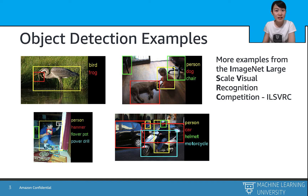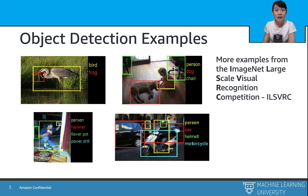While object detection became more popular and prevalent in the modern era, starting from 2013, the ImageNet competition also added the object detection task. There are 200 basic level categories for this task, which are fully annotated on the dataset, meaning the bounding boxes for all the categories in the image have been labeled.